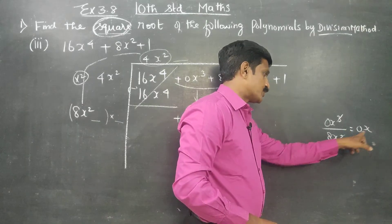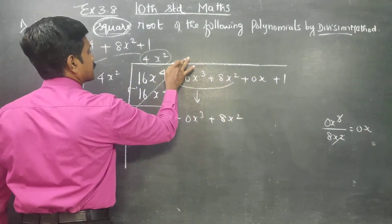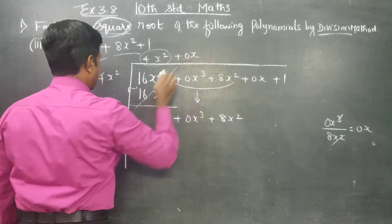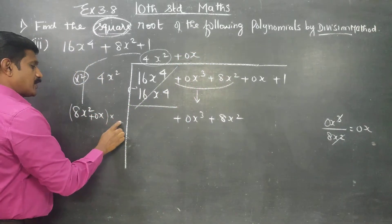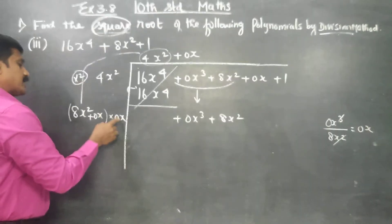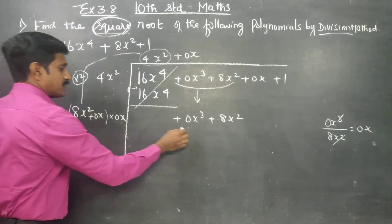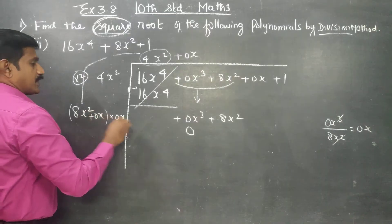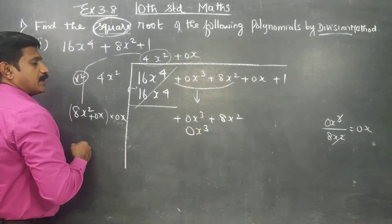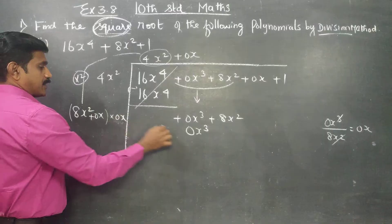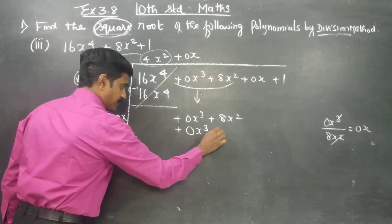For the descending powers — power 3, then 2, then 1 — fill in 0x for the missing terms. The 0x terms must be filled in. 0 into 8 is 0. x into x square is x cube. The symbol: plus into plus is plus, plus into plus is again plus. 0 is 0. x into x is x square.